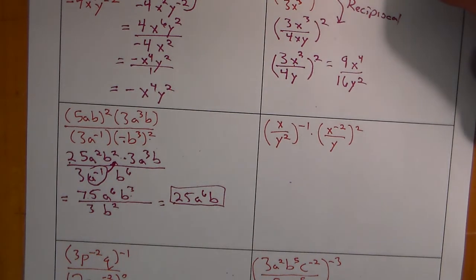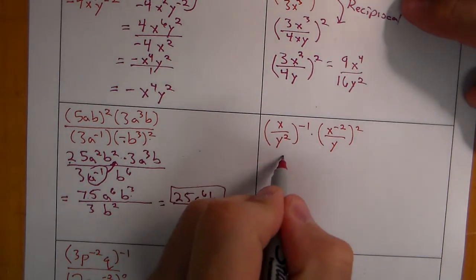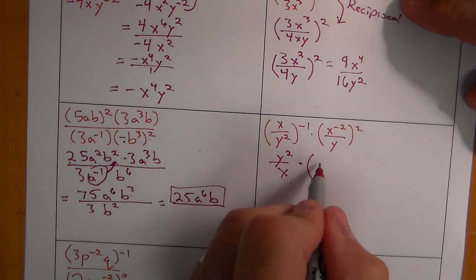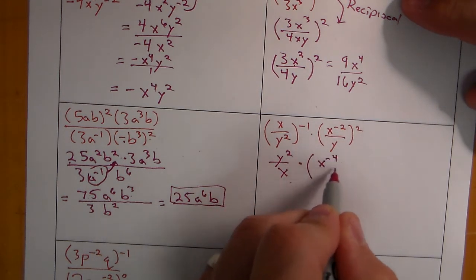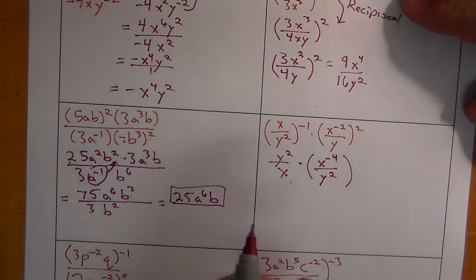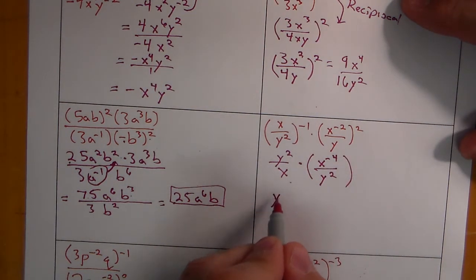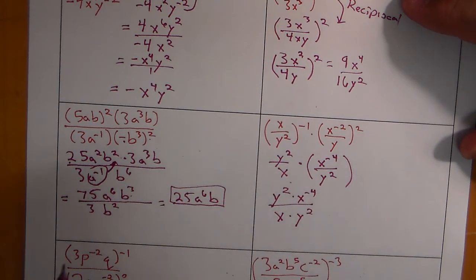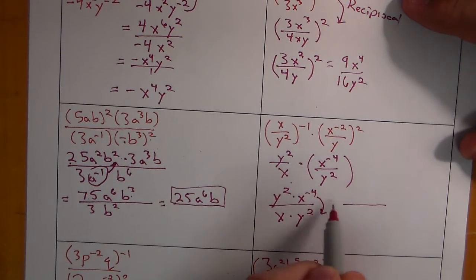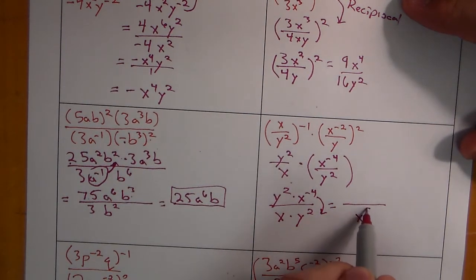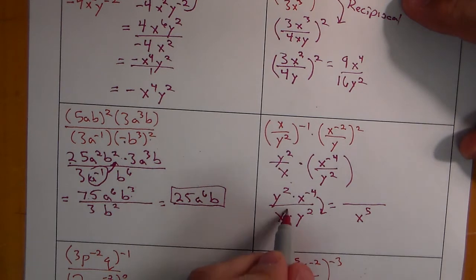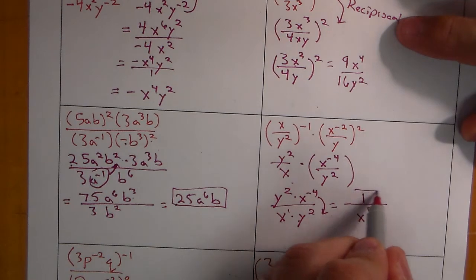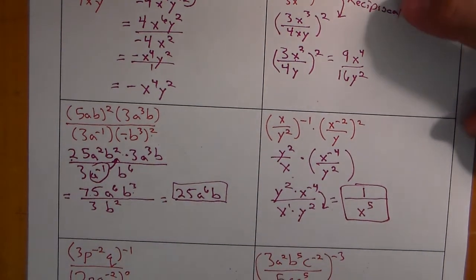For the next problem, take the reciprocal first to get rid of the negative exponent: y squared over x. Then apply the power rule to get x to the negative 4 over y squared. Multiplying them together: y squared times x to the negative 4 over x times y squared. The negative 4 comes down, leaving 5 x's in the denominator. Y squared over y squared equals 1, so the final answer is 1 over x to the fifth.